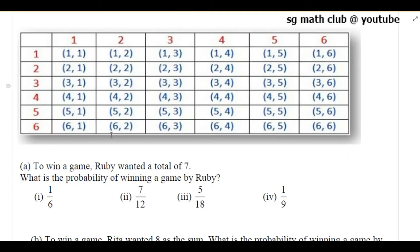When you throw 2 dice at a time, these are the possible outcomes. The first die and the second die both can take the number 1. The second die can take the number 2 and the second die can take number 1. To win the game, Ruby wanted a total of 7, so we need to find combinations where the sum of the 2 numbers equals 7.